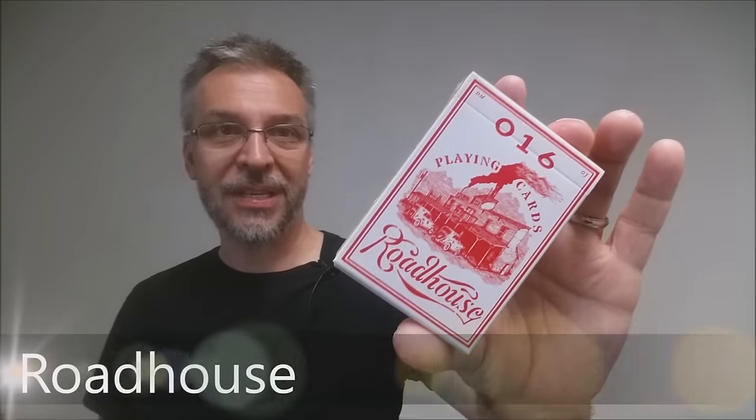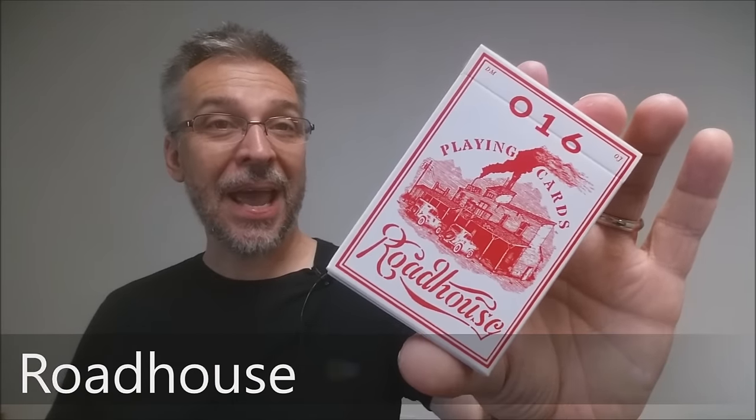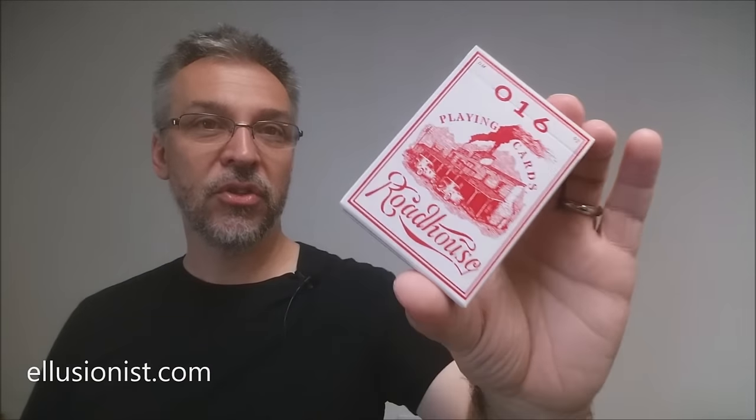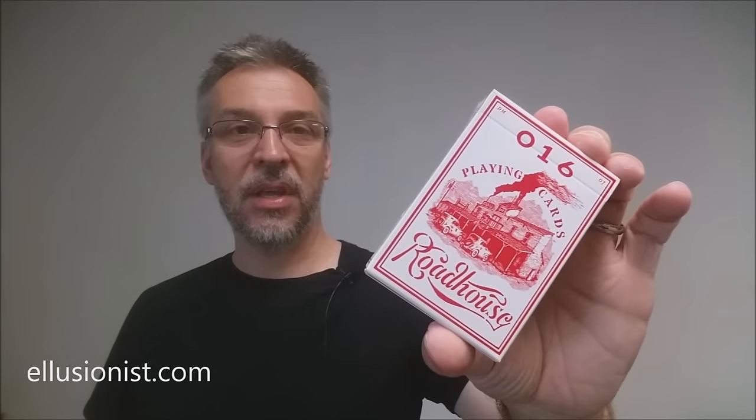Alright, today we're going to look at the Roadhouse deck. Now the Roadhouse deck was a collaboration between Daniel Madison and the illusionist designer Oban Jones. It was Daniel's dream, Daniel's wish to make a deck that paid tribute to or looked similar to the classic steamboat deck. So if you have a deck of steamboats, you might know what those look like. They are a casino deck, they are a thicker stock deck, and so this is Daniel and Oban's version of what the illusionist's take would be on that deck.